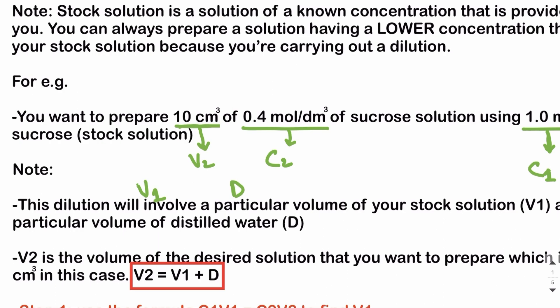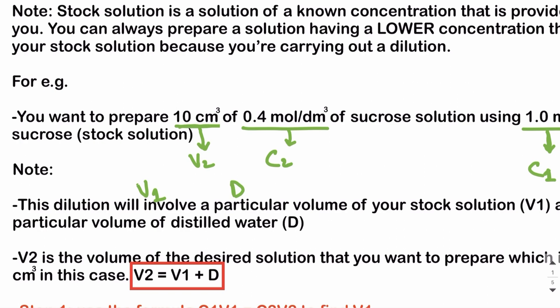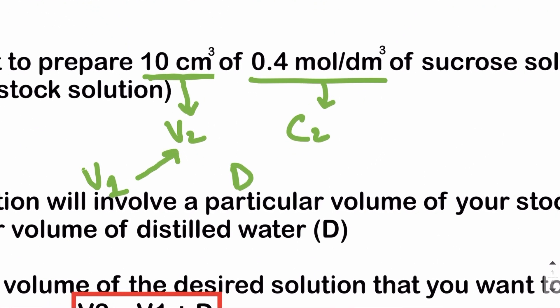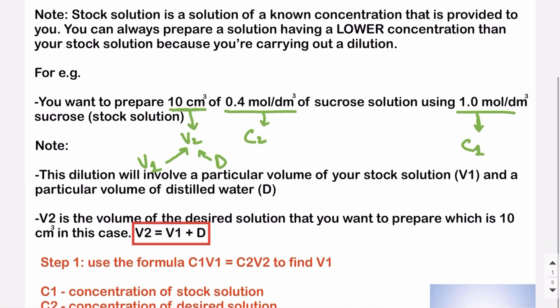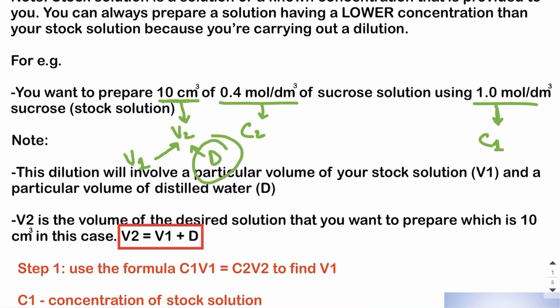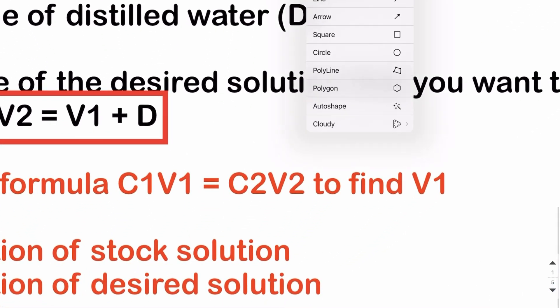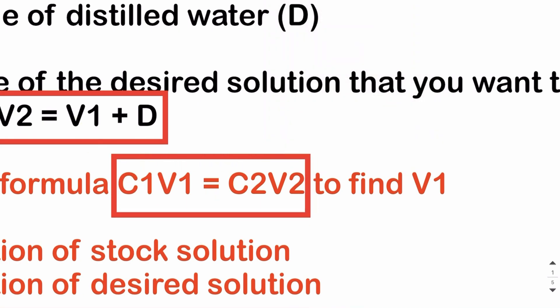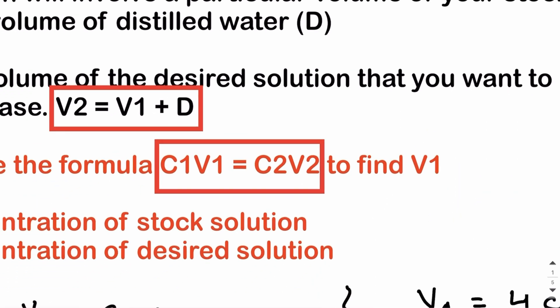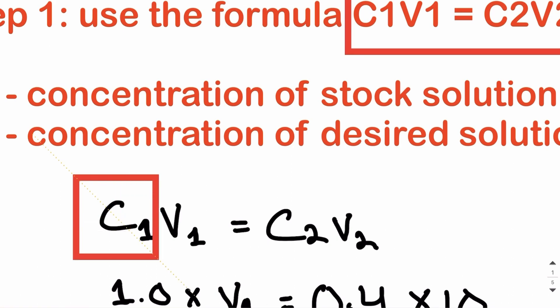The volume of the stock solution used is V1, and the volume of distilled water used is denoted as D. When we add V1 and D together, we get the diluted solution at the desired concentration, and V1 + D = V2. To find V1, we use the formula C1V1 = C2V2.